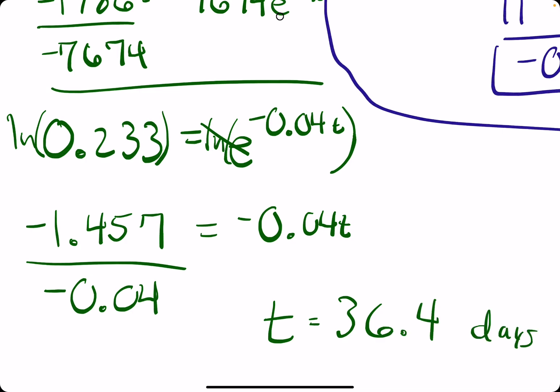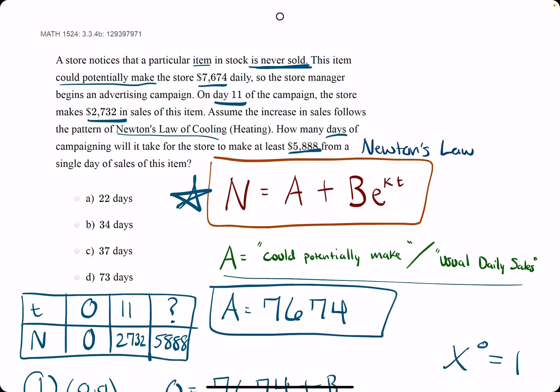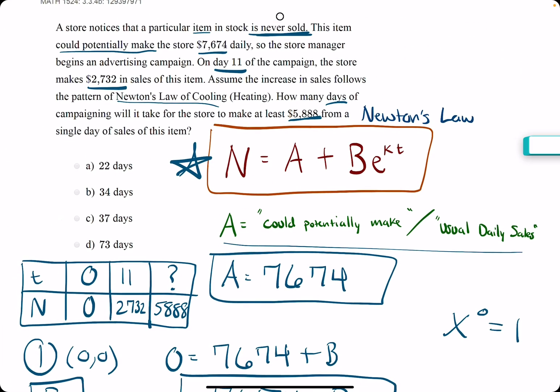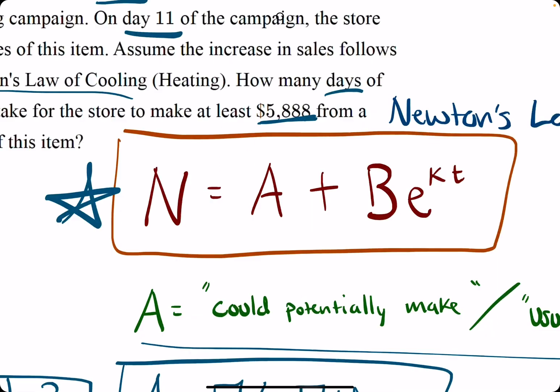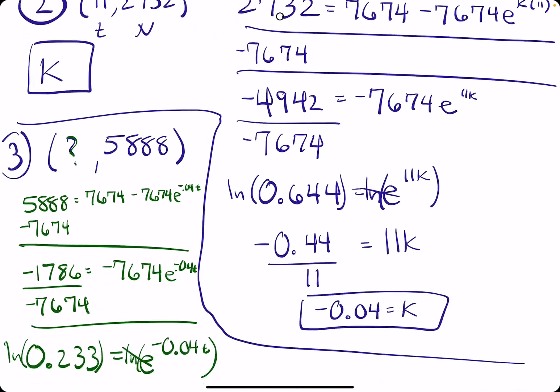That is in days, so we look for our closest answer. We round up to 37 days—to the nearest whole number—so that we make at least that much money. And we're done.